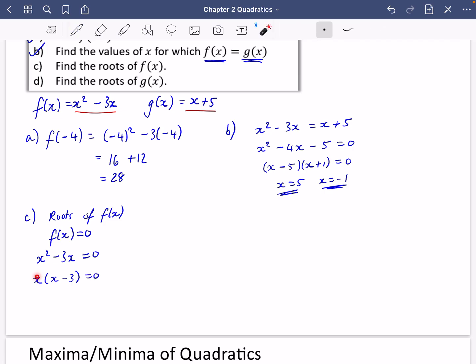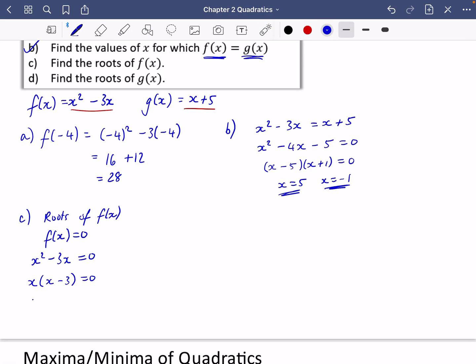This tells me that either x is equal to 0 or x minus 3 is equal to 0. In other words, my solutions are x equals 0 or x equals 3. So when it talks about finding the roots of f of x, it just means make f of x equal 0.